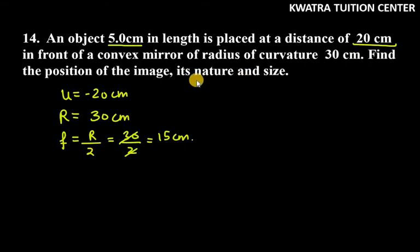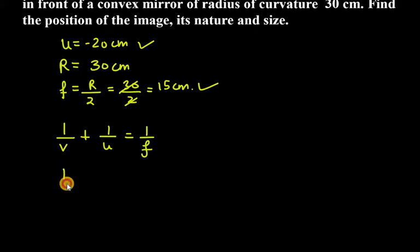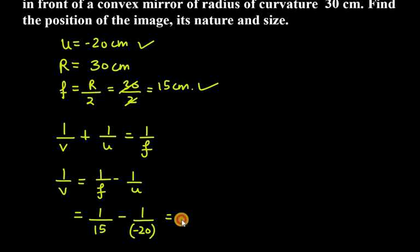We have u and f given. Now we can easily find the position of the image using the mirror formula: 1 over v plus 1 over u equals 1 over f. Rearranging, 1 over v equals 1 over f minus 1 over u. Substituting, it is 1 over 15 minus 1 over (minus 20), so minus minus becomes plus, giving 1 over 15 plus 1 over 20.